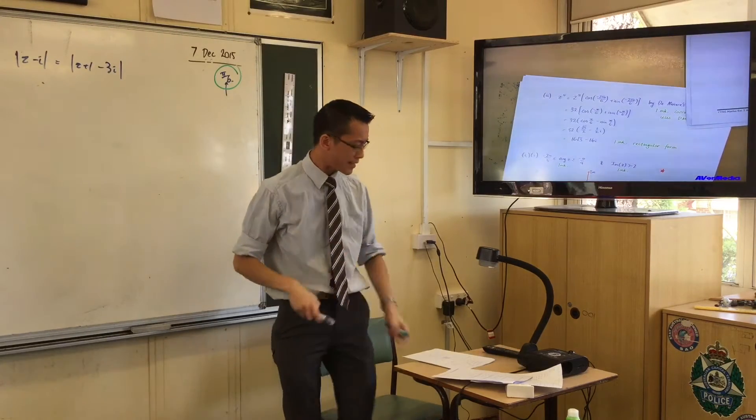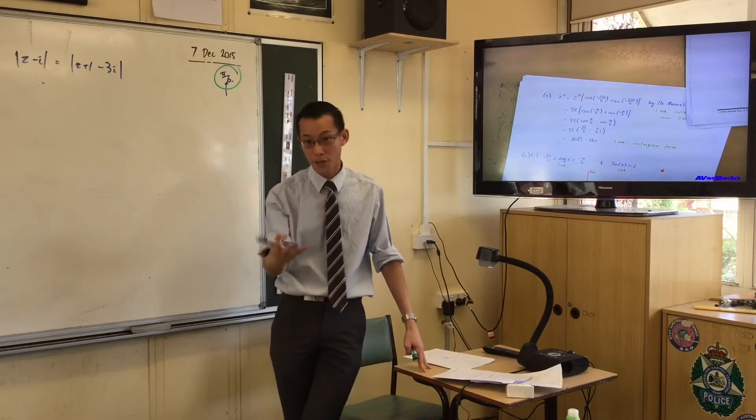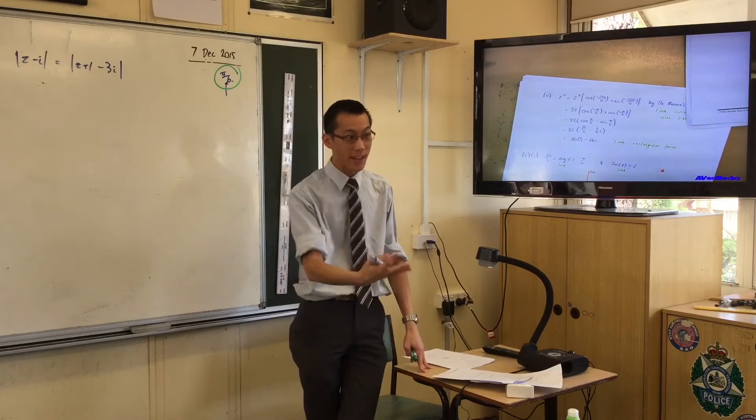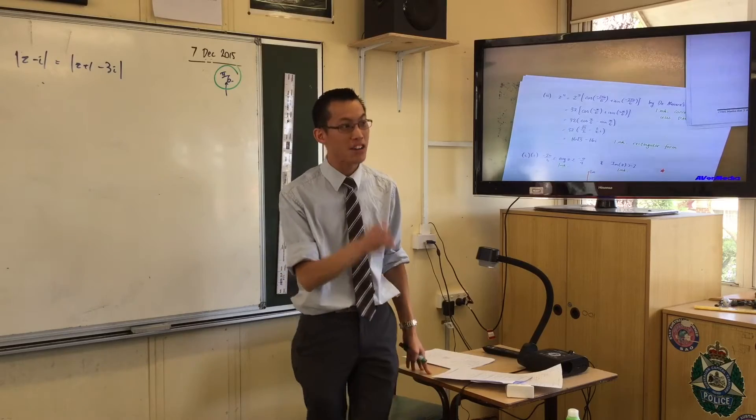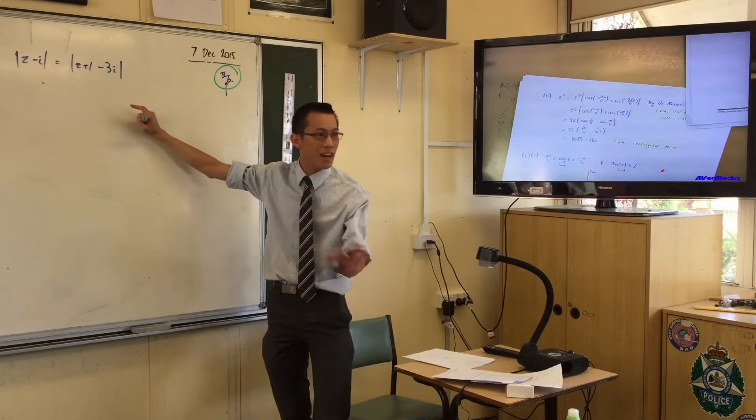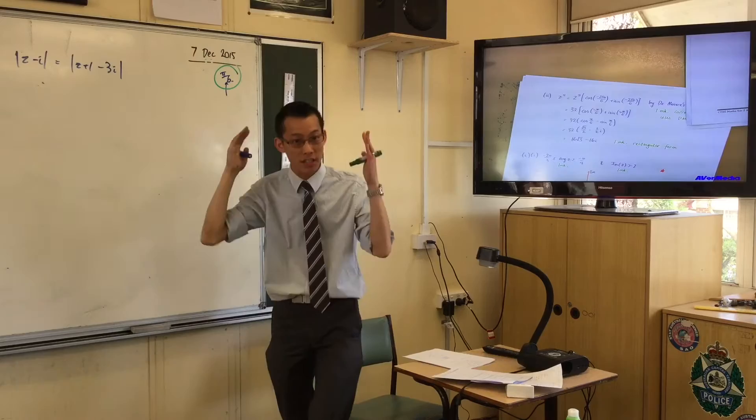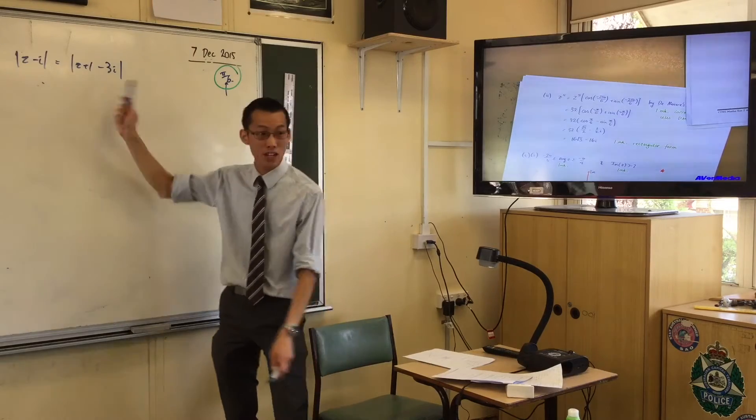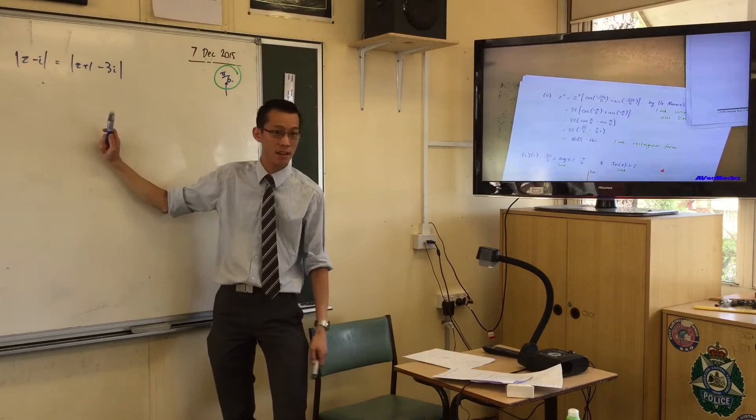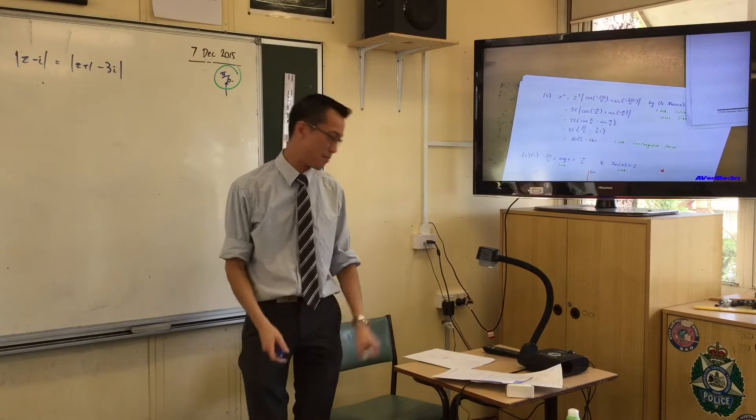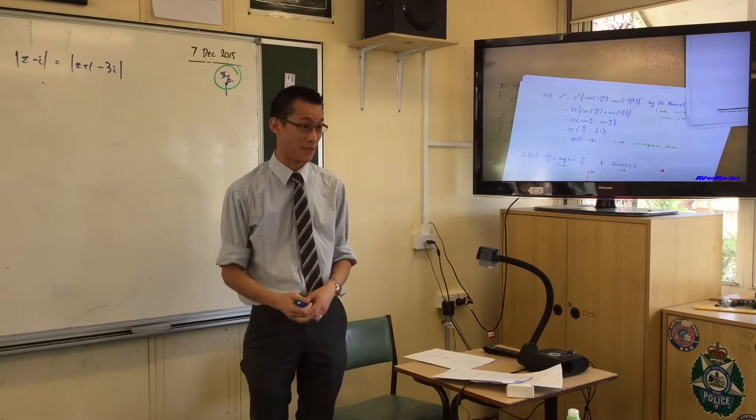Now, the fact that part d is there after part c, part 2, is kind of me winking at you to say, hey, I know you can graph this without appealing to any algebra. You shouldn't need to. If you appealed to algebra to do this and part d wasn't there, you just spent five minutes of your time that you're going to regret at the end of the paper.